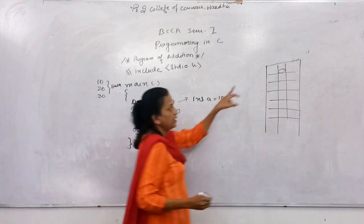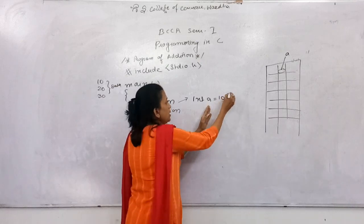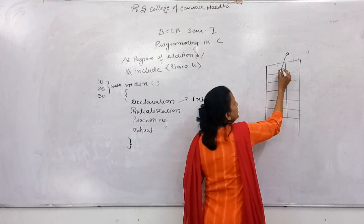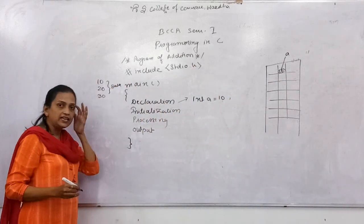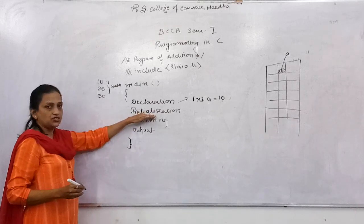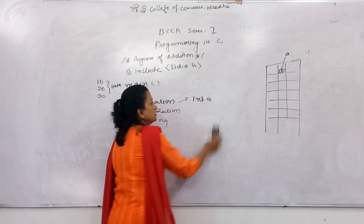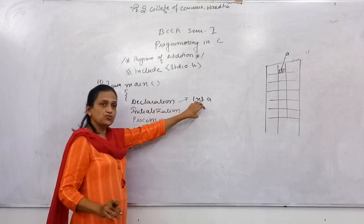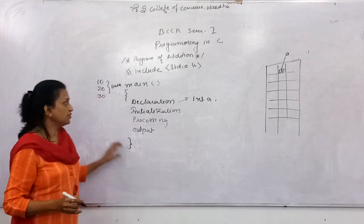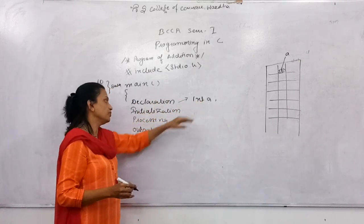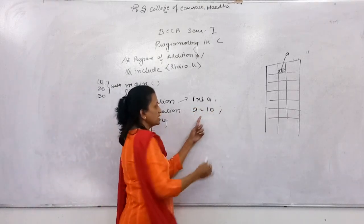What will happen? The space named A — when you initialize a value to variable A, that value is stored in that space. So first you need to do the declaration. Initialization means giving a value. You can initialize a value at the time of declaration also. But if you didn't initialize the value at the time of declaration, then you can initialize it later using the assignment operator.